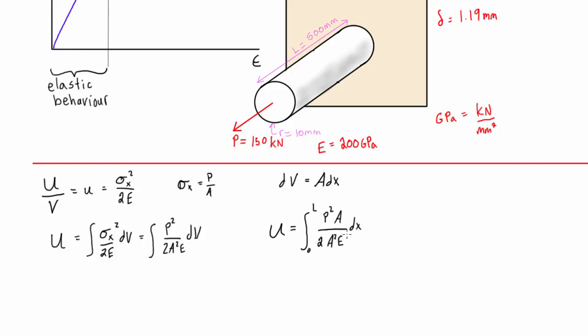All right, we can cancel out one of those A's up top with one on the bottom, and then we can write this just as the elastic strain energy is equal to the integral from zero to L of P squared over 2AE dx.